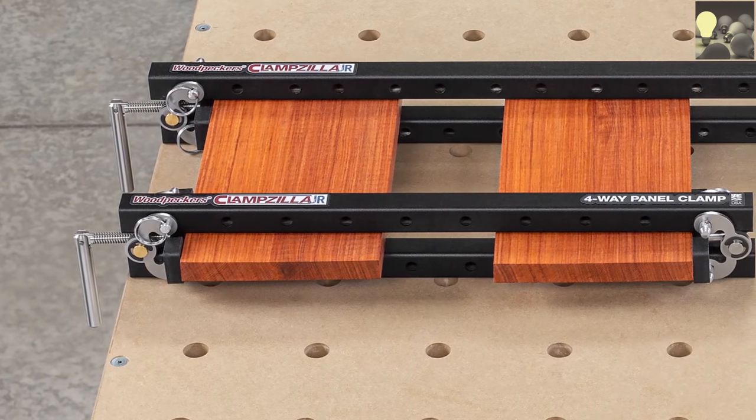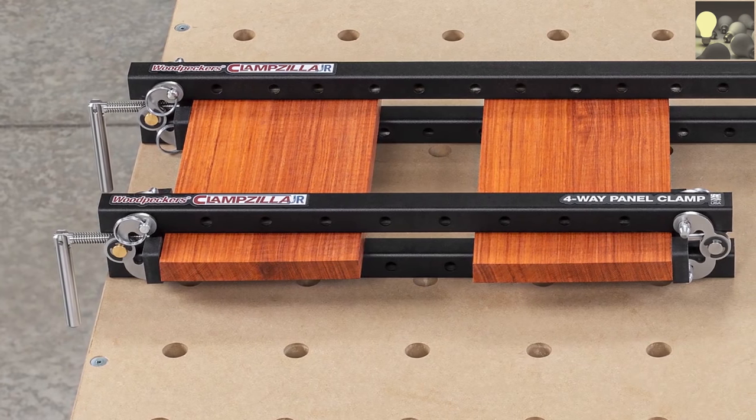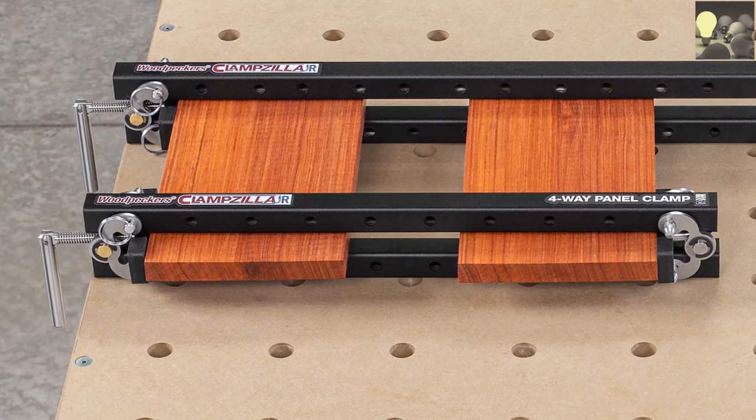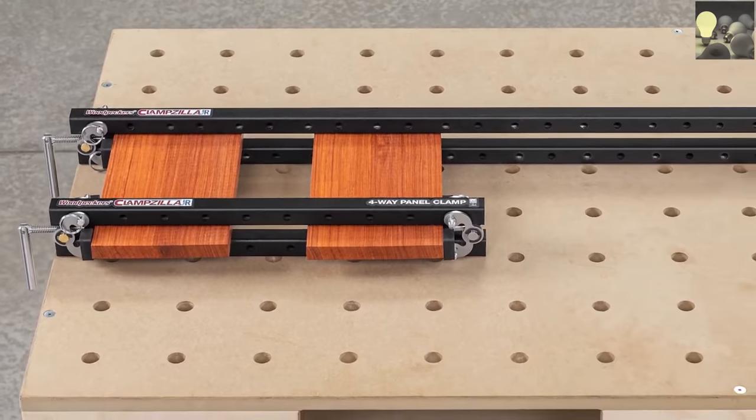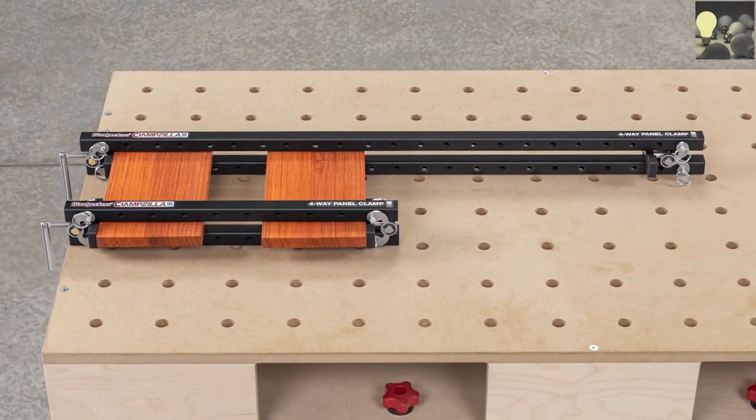The standard bars on Clampzilla Jr. will let you glue up panels up to 19 1/2 inches wide on 3 1/4 inch material. A little more on thinner stock, and a little less on thicker stock. If you need more width, we offer a set of extended bars that will give you a capacity of 37 1/2 inches on 3 1/4 inch stock.